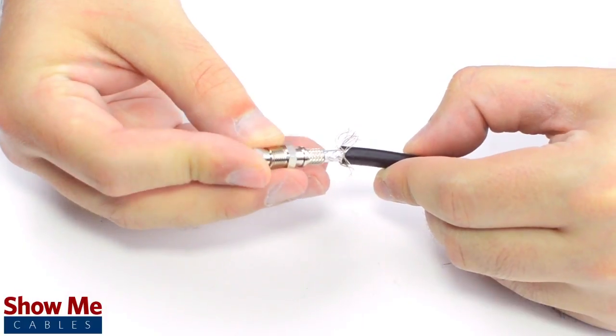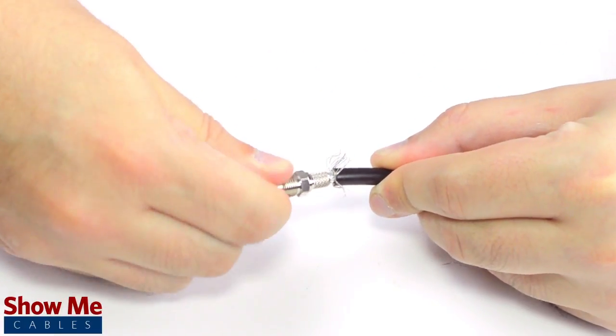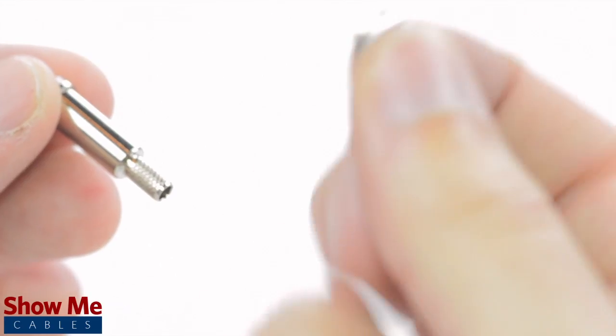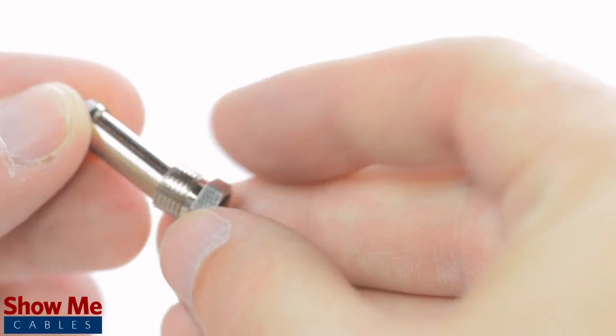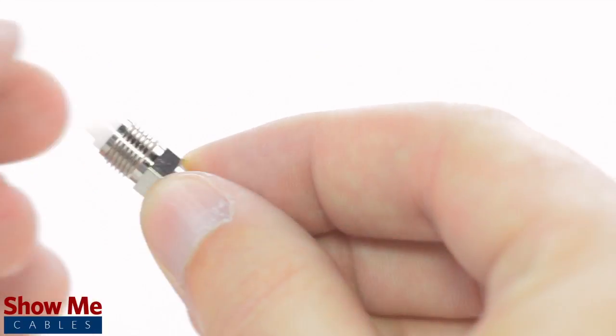Apply pressure and twist to make sure that the center conductor makes contact with the center pin. Some female connectors will have the female threading as a separate piece. Simply insert it onto the connector with the threads facing up before inserting it onto the cable.